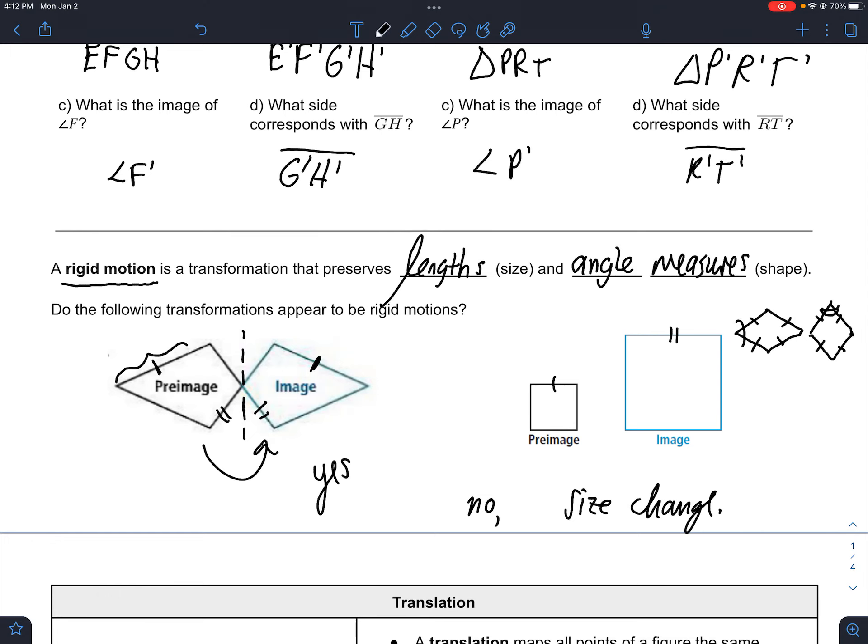So you've got to have both of them preserved. Size can stay the same, and if the angle measures change, then it's no good. Like imagine if it turned to this, but these are right angles - that's different.